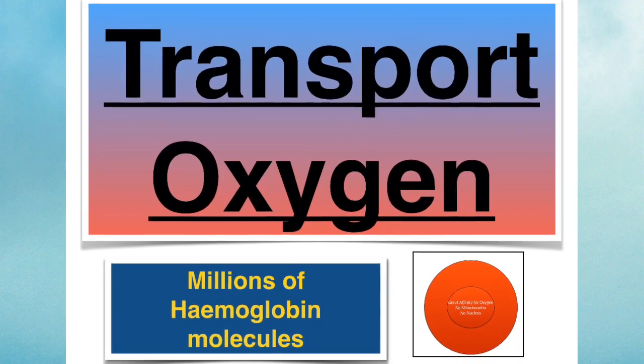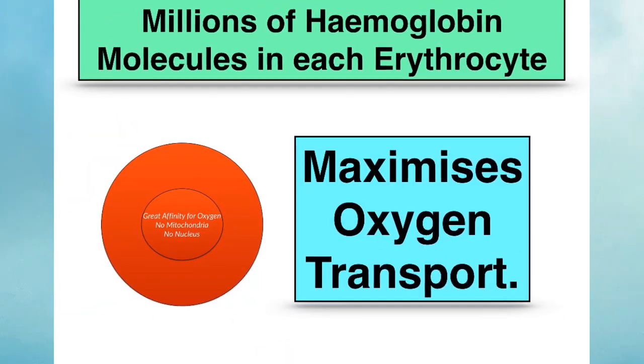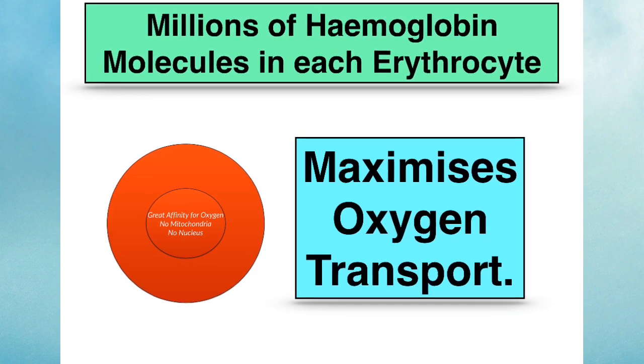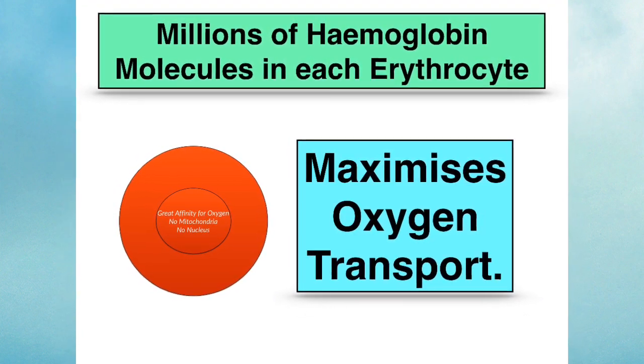For now, on your course, we're really only interested in how oxygen is transported. Each individual red blood cell or erythrocyte contains millions of haemoglobin molecules, and this maximises oxygen transport.